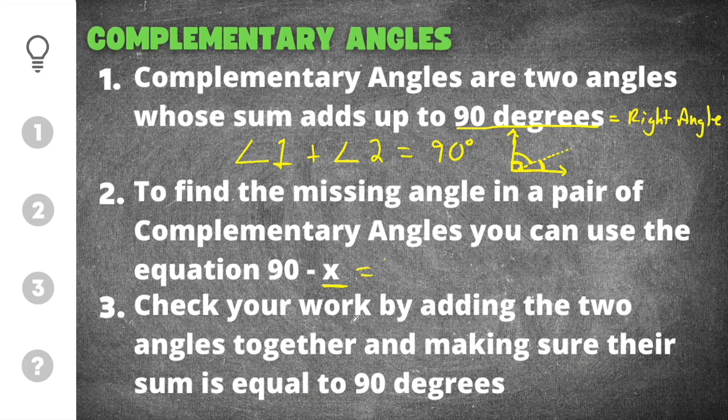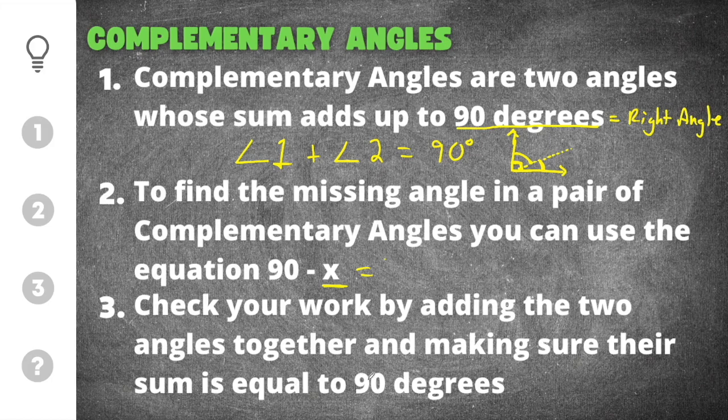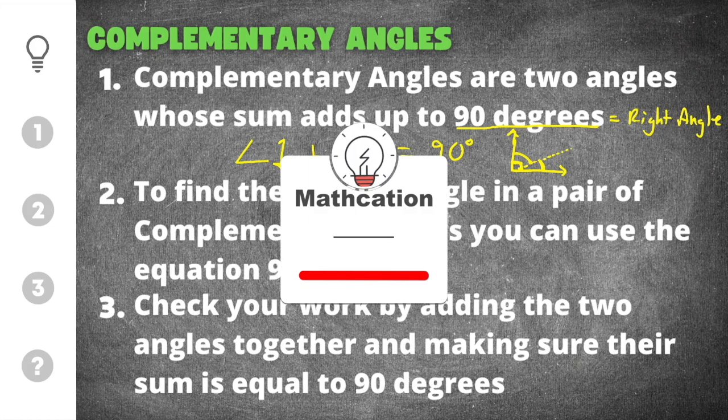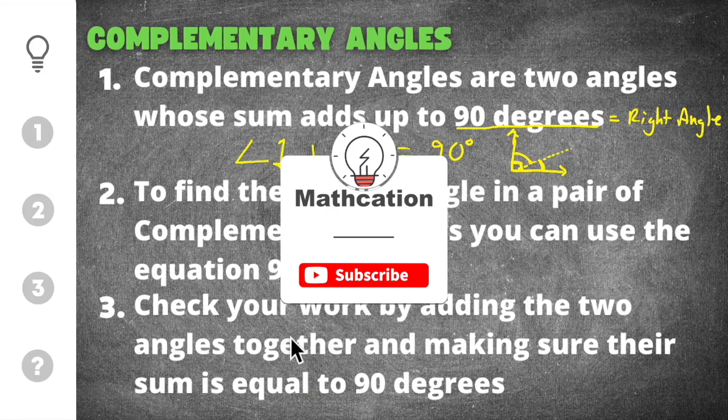And the last tip is to check your work by adding the two angles together to make sure they equal 90 degrees. Now this one isn't 100% needed, but it is helpful if you want to double-check your work. And if you're learning anything right now, don't forget to subscribe so you don't miss out on other helpful math videos.